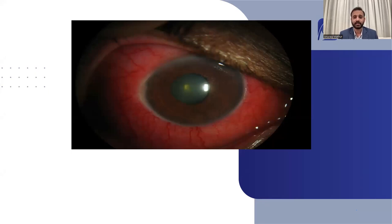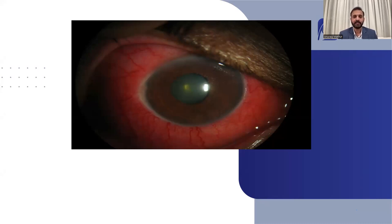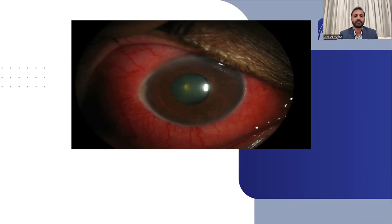But this is not conjunctivitis. If you look very astutely, these vessels are not superficial — they are deeper vessels. In conjunctivitis, you see congestion of superficial conjunctival vessels, but in this condition the vessels are radiating away from the limbus and are deeper in nature. You can also see a diffuse, deeper, dull kind of congestion rather than a bright congestion. This condition was recurrent episcleritis.